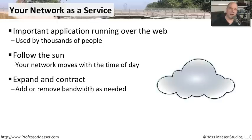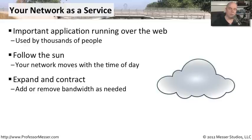You can also expand and contract how much of this you happen to be using. If your application one day is being used by millions of people — let's say it's tax time and everybody's working on tax information — in the April time frame it becomes very, very busy. You can easily, with a few clicks of the mouse, allocate more bandwidth, more disk space, or anything you might need instantly, and suddenly you have more capacity. When the middle of the year comes along and you don't need all of that bandwidth, there's no reason to pay for it. You click a few more buttons and it decreases the requirements for network throughput or CPU cycles to something more reasonable for what your application happens to be doing.